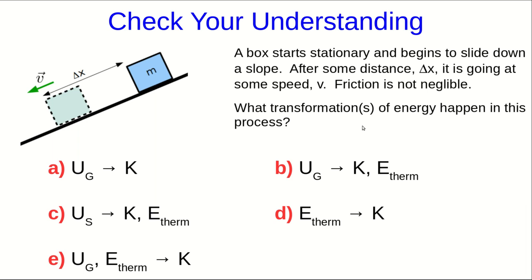So let's check your understanding. Think about a box which starts stationary and begins to slide down a slope. And after going some distance, it's sped up somewhat. And friction is not negligible. So what transformation or transformations of energy are going on in this process?